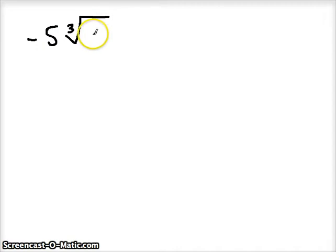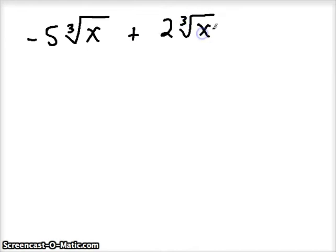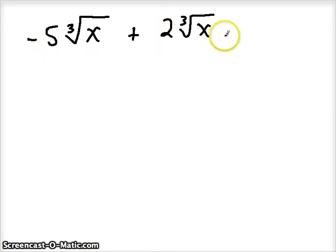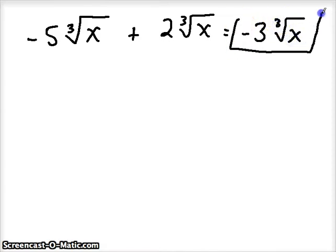Let's try another one: negative five cube roots of x added to two cube roots of x. Check the index — cube roots for both. Check the radicand — x under both. So we can combine their coefficients. Negative five plus positive two gives negative three, so the answer is negative three cube roots of x.